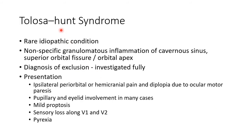Tolosa-Hunt syndrome is a rare idiopathic condition in which there is nonspecific granulomatous inflammation of the cavernous sinus, superior orbital fissure, or orbital apex. It is a diagnosis of exclusion, so the case should be investigated fully. Presentation includes ipsilateral periorbital or hemicranial pain and diplopia due to ocular motor paresis.